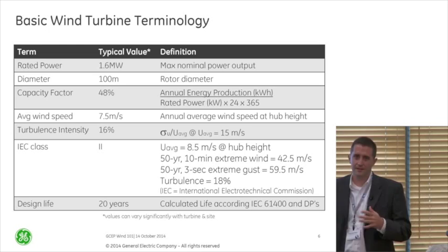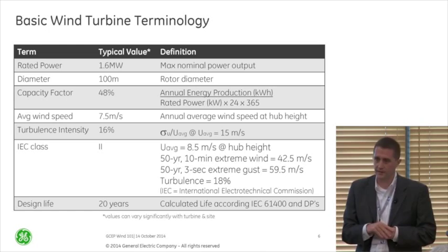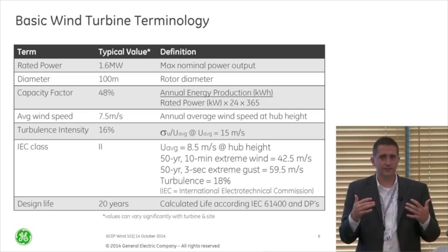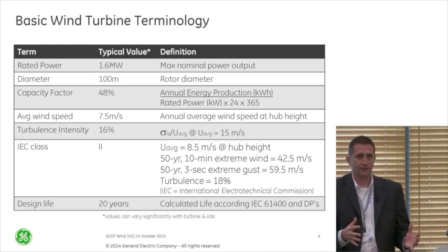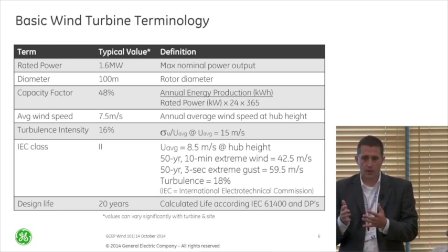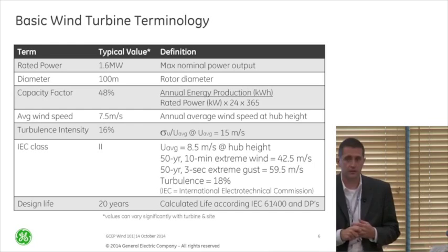Associated with that is some sort of turbulence intensity factor, which is important. We also have an IEC class — we design a wind turbine to an IEC standard, and they have different wind classes. An IEC class three has a wind speed of seven and a half meters per second; a class two is eight and a half meters per second. That's associated with distribution factors including maximum wind speed, maximum gust, and maximum average wind speed to design for.